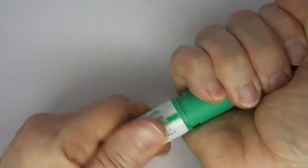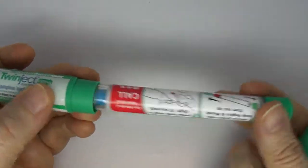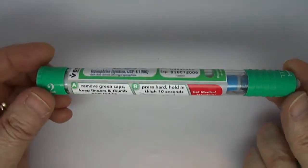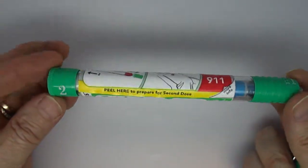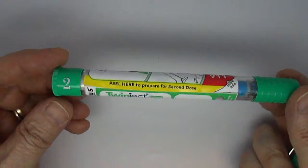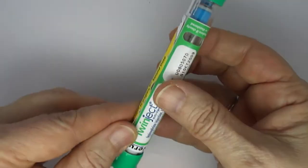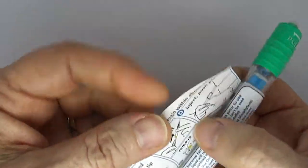Open this up and you can see it looks a lot like an Auvi-Q or a generic for Auvi-Q auto-injector. It has two caps and a label that you can open further and get more information.